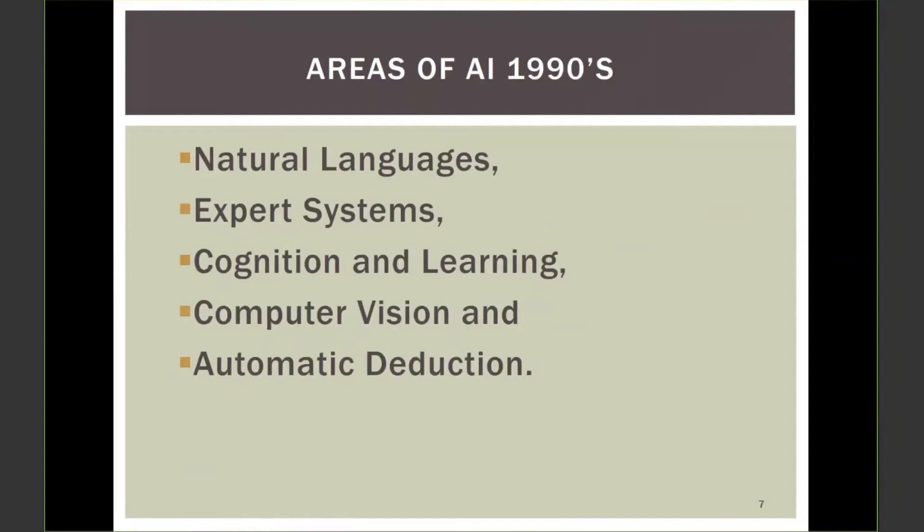That was pretty common thing to find in expert systems. By the mid-90s, the areas of AI were natural languages instead of language translation, expert systems, cognition and learning, computer vision and pattern recognition, automatic reduction. But the interesting thing is that expert systems were something like 65% of all studies - a large number of expert system systems. A company called Coopers & Lybrand, which became PWC - Coopers Price Waterhouse Coopers - actually had a large group of people working on a tax advisor and on an audit planner.